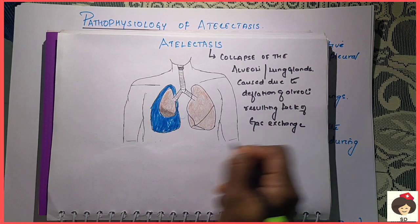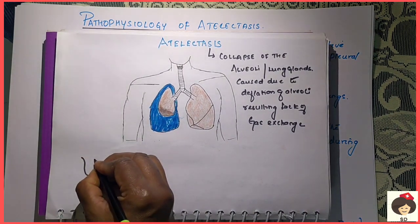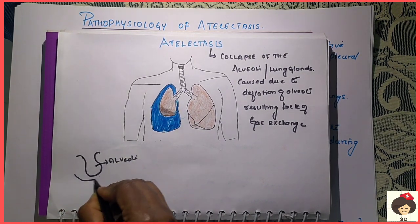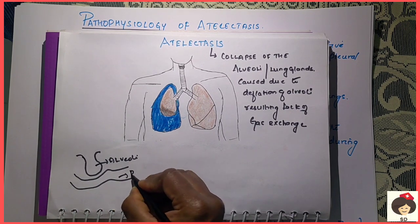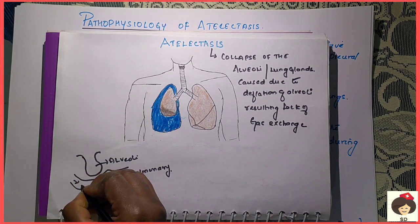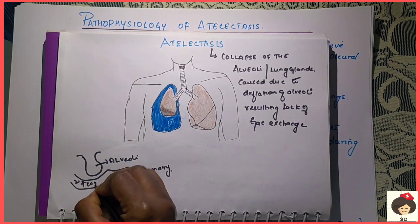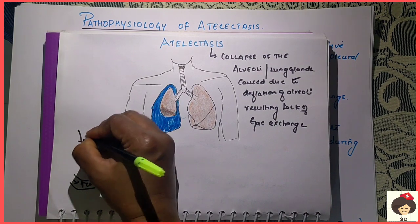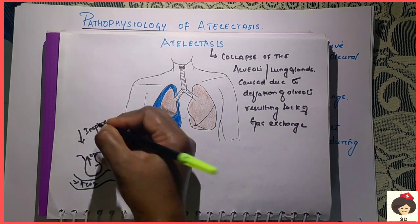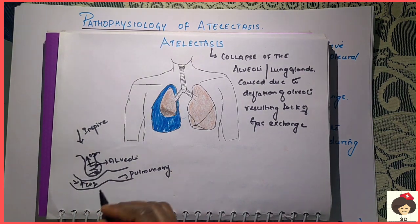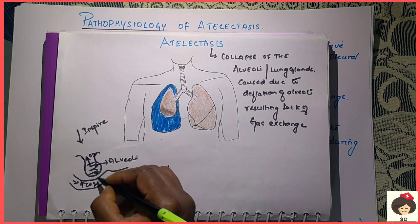So you know the main function of the alveoli. If you see, one alveolus is like this — there is a pulmonary capillary coming from the heart. When the pulmonary capillary comes, it will bring deoxygenated blood, that is blood with increased carbon dioxide, whereas in the alveoli there will be increased oxygen when we inspire.